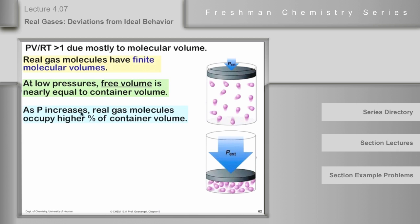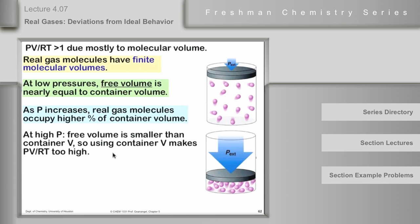Now, as the pressure increases and the volume decreases, eventually we get to some place where these molecules, taken together, occupy a significant fraction of the available volume. Right? A significant fraction of it, rather than a negligible amount. So at high pressure, the free volume is smaller than the container volume because of how much space is taken up with all these molecules, these big molecules.